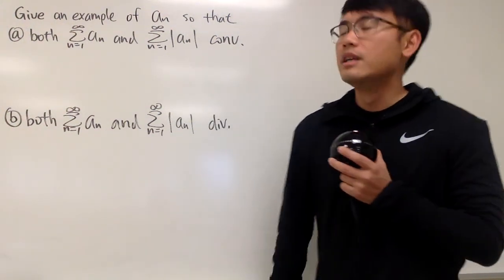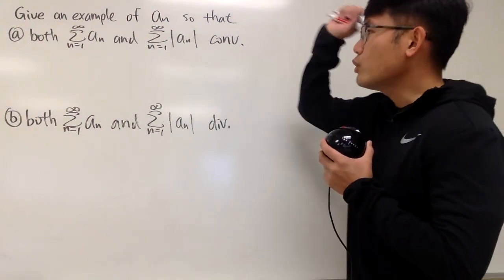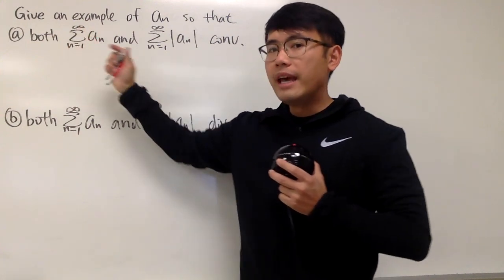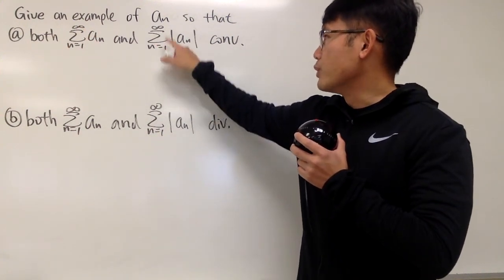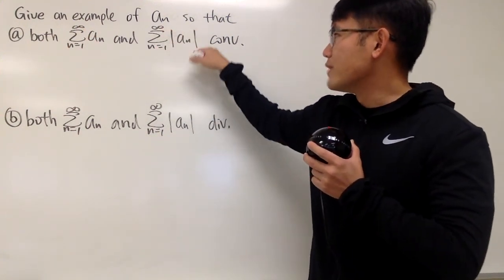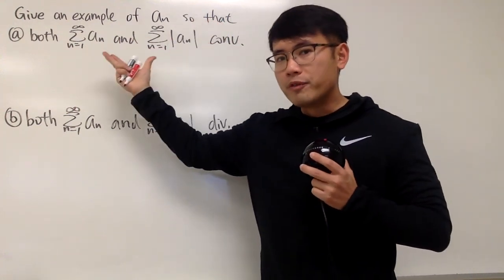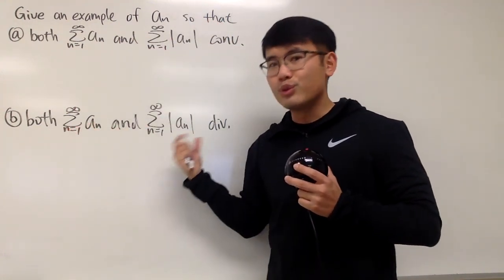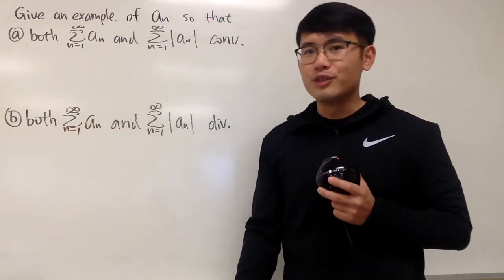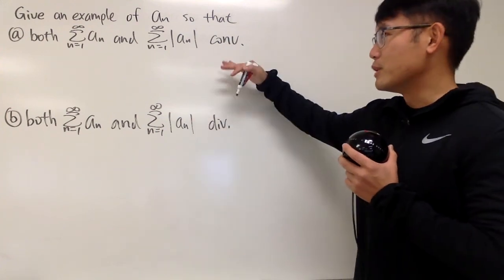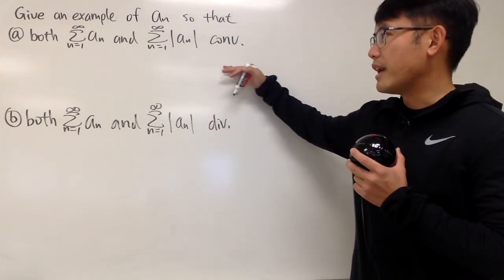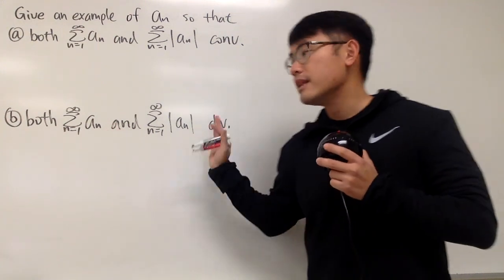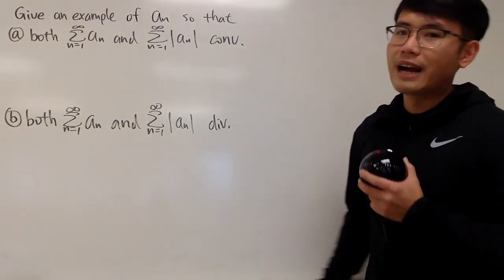In this video, let's talk about a sequence a_n, so that the series as n goes from 1 to infinity of a_n, and the series as n goes from 1 to infinity of the absolute value of a_n — I want both to converge for the first part, and then I want both to diverge for the second part. I'm going to come up with an example for a_n where each of these cases happens.